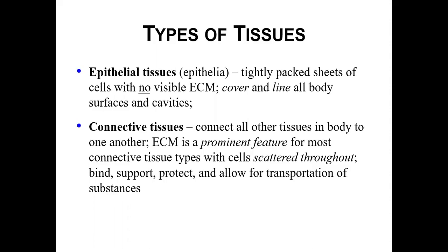There are four major types of tissues found in the body. I'll give you a brief introduction of each one now, and then we'll go through each one individually. In the lab portion, you'll see specific examples of each of the four tissue types.